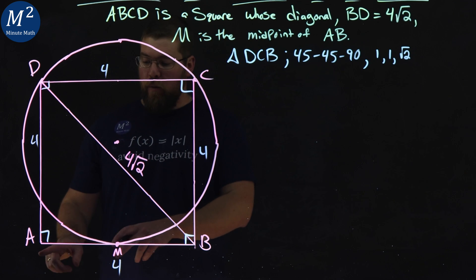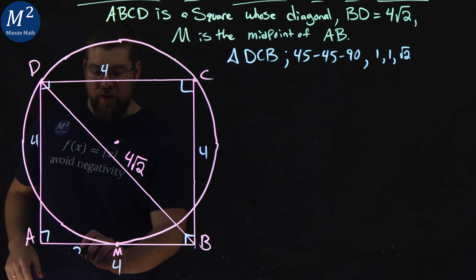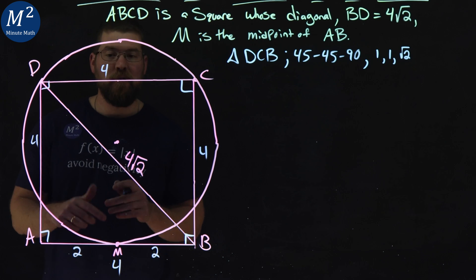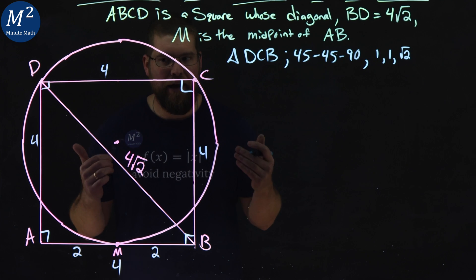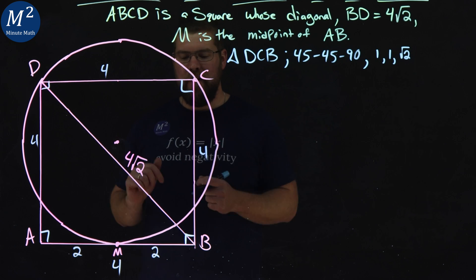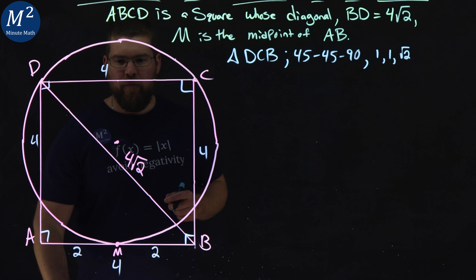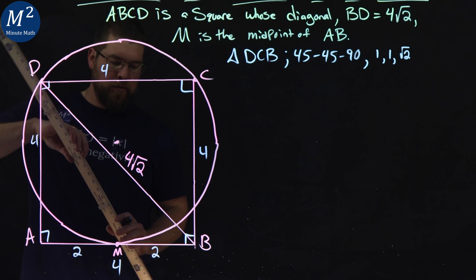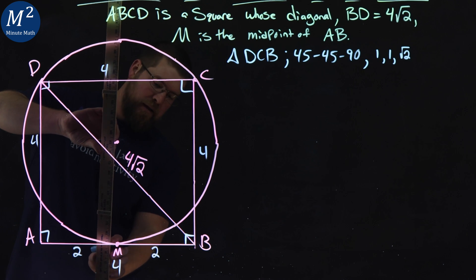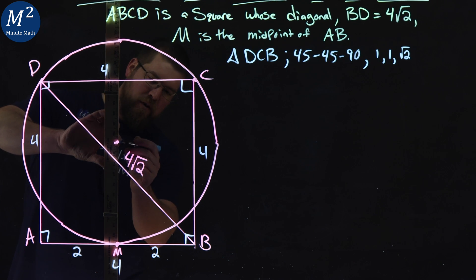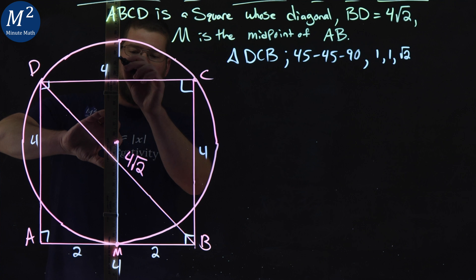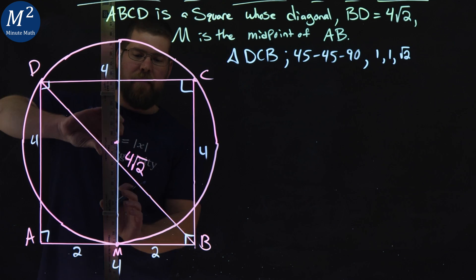Now with that, that means length AM is going to be a 2 and this length here is a 2, because remember AM splits line AB in half. All this good information. Now let's draw a radius here from the center of the circle down to M and let's keep going up as well. So we got a radius down to M all the way up to the top.